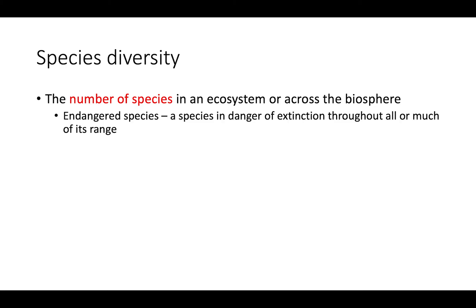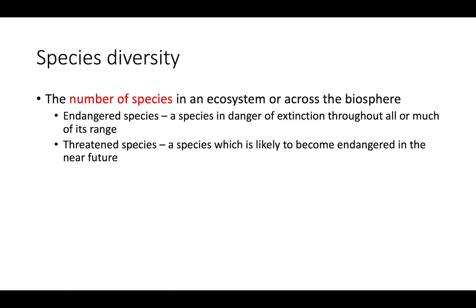Relating to species diversity are a couple of important terms. An endangered species is a species that's in danger of extinction throughout all or much of its range — the natural geographic regions where that species can be found. A threatened species is a species which is likely to become endangered in the near future; they're not endangered yet, but they most likely will be in a couple of years.